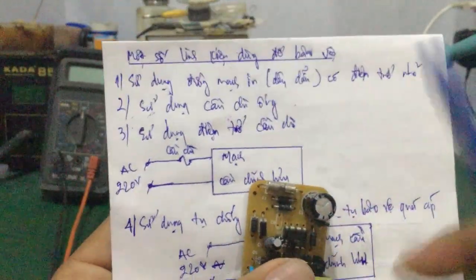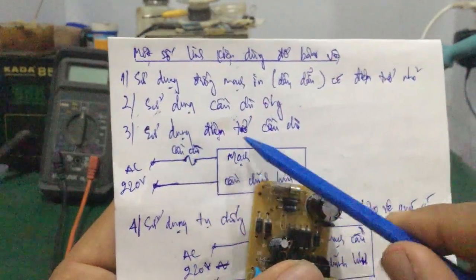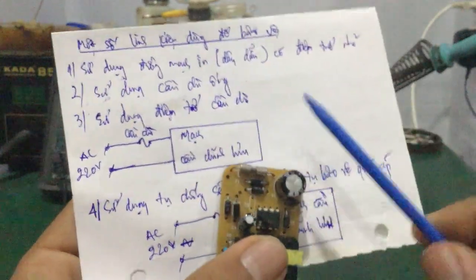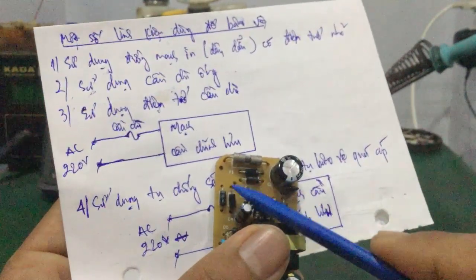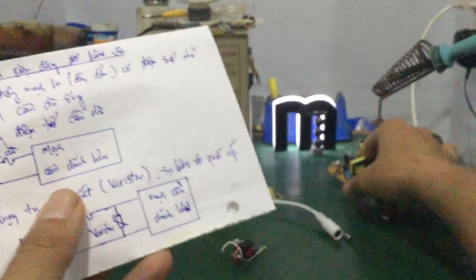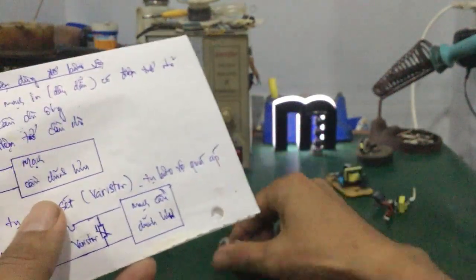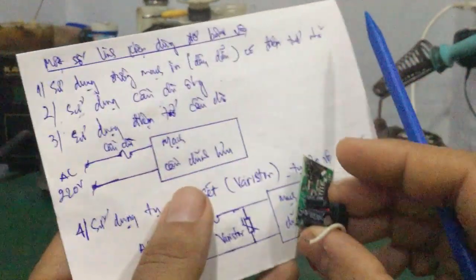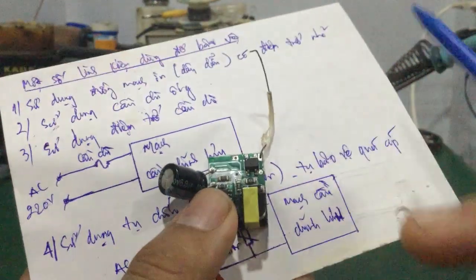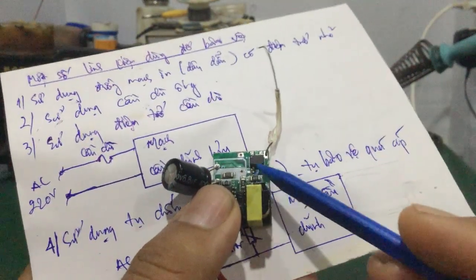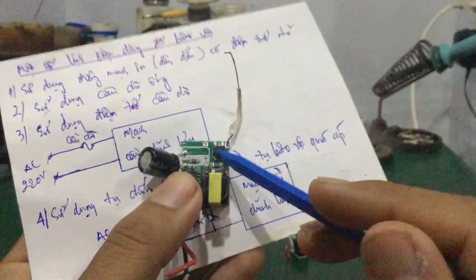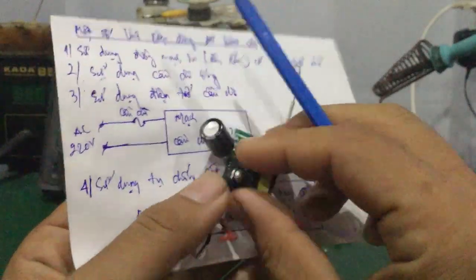Thì cái cầu chì ống này nó được mắc trước cái mạch chỉnh lưu nha. Chỉnh lưu ở đây là chỉnh lưu cầu, 4 nguồn diode ống, hoặc là dùng IC chỉnh lưu. Con IC này tích hợp 4 con diode rồi bên trong ha.